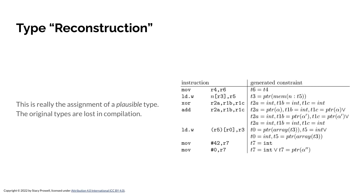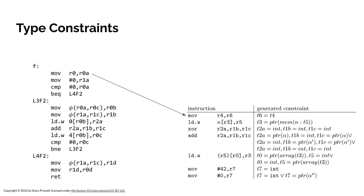Now we can apply his type reconstruction rules. We look at each line, match it against one of those rule patterns, and apply the generated constraint — all constraints have to be simultaneously true for any solution. The first one is the move, which gives us the constraint: if I'm moving r4 into r6, I get T6 equals T4. Moving r0 into r0A gives us type-0A equals type-0.